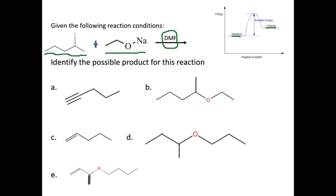Aprotic solvents favor SN2 or E2 reactions. Since the products are higher than the reactants, the reaction is endothermic, which indicates an E2 mechanism. Going through the answer choices: C is an elimination product, the others are either wrong structures or substitution products. So C is the most likely product based on the conditions given.